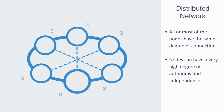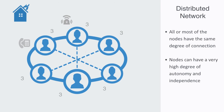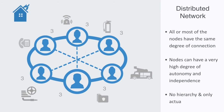An example of a distributed network might be a community alert group, where each member of the community has equal responsibility and authority to act when there is an event that others should know about. There is no hierarchy, and in this example the network is only actualized when needed, thus placing very limited constraints on its members. Within the world of computing, distributed networks are also called mesh networks.